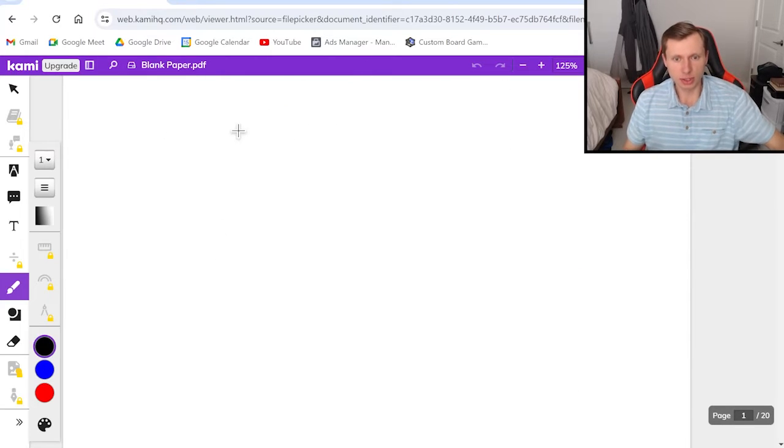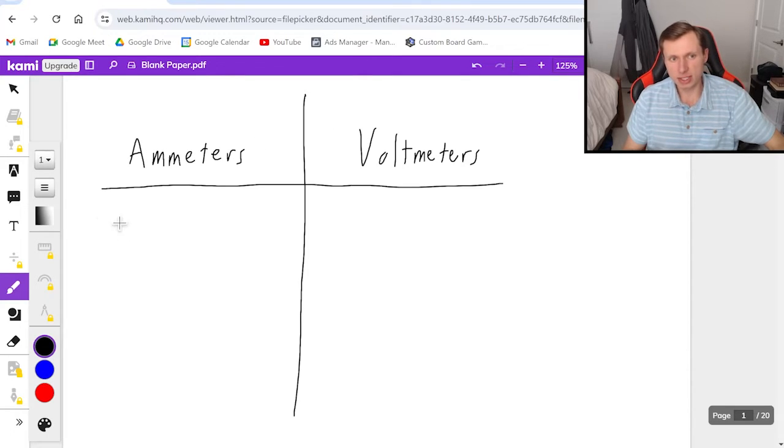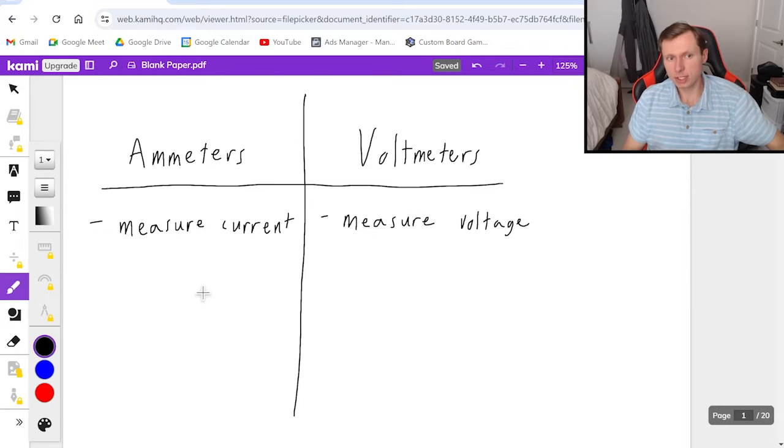So first let's get started with a little t-chart to explain what the difference is and what they both do. The biggest difference is that ammeters will measure current and voltmeters measure voltage. The second big difference is how they're placed: ammeters are going to be placed in series with the resistor you want to look at while voltmeters are going to be placed in parallel around the resistor you want to look at.